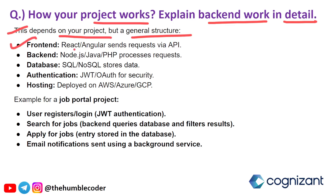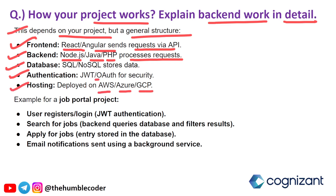For example, if someone has made a job portal website, a general structure could be: for the frontend I used React or Angular, which sends requests via API; for the backend I used Node.js, Java, or PHP for processing requests; for the database I used SQL or NoSQL for storing data; for authentication I used JWT for security; and for hosting I deployed it on AWS, Azure, or GCP. Remember — choose only one hosting platform and one database from these options when speaking about your own project.